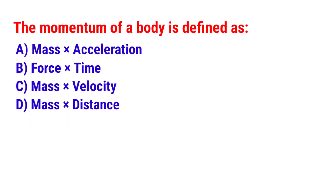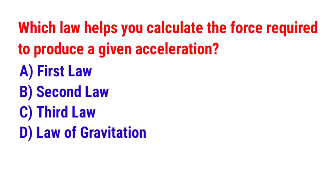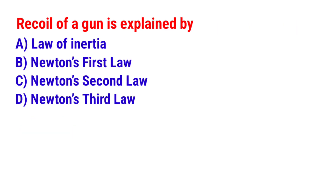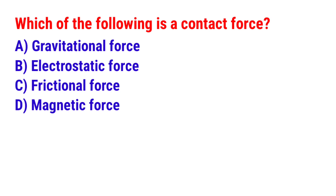Next question: The momentum of a body is defined as? The answer is option C — Mass into velocity. Next question: Which law helps you calculate the force required to produce a given acceleration? The answer is option B — Second law. Next question: Recoil of a gun is explained by? The answer is option D — Newton's third law. Next question: Which of the following is a contact force? The answer is option C — Frictional force.